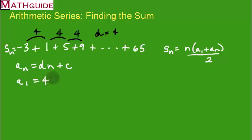So I'm going to replace the N with one in the formula. We don't know what this constant is, but we do know what the first term is. The first term is negative three.